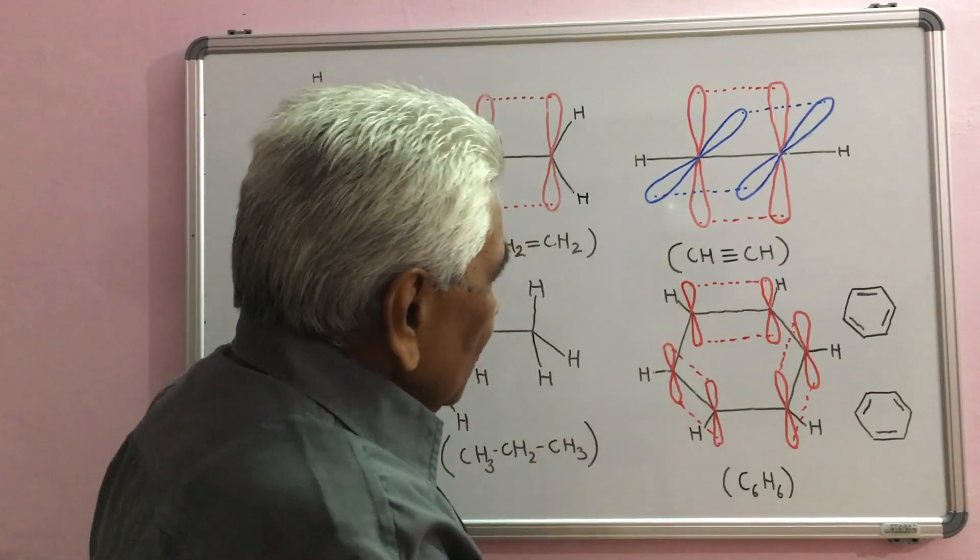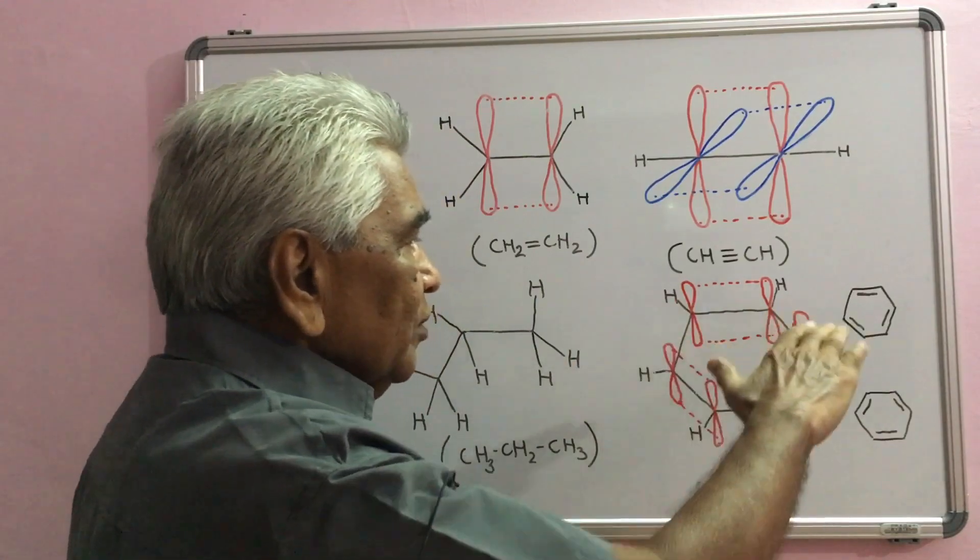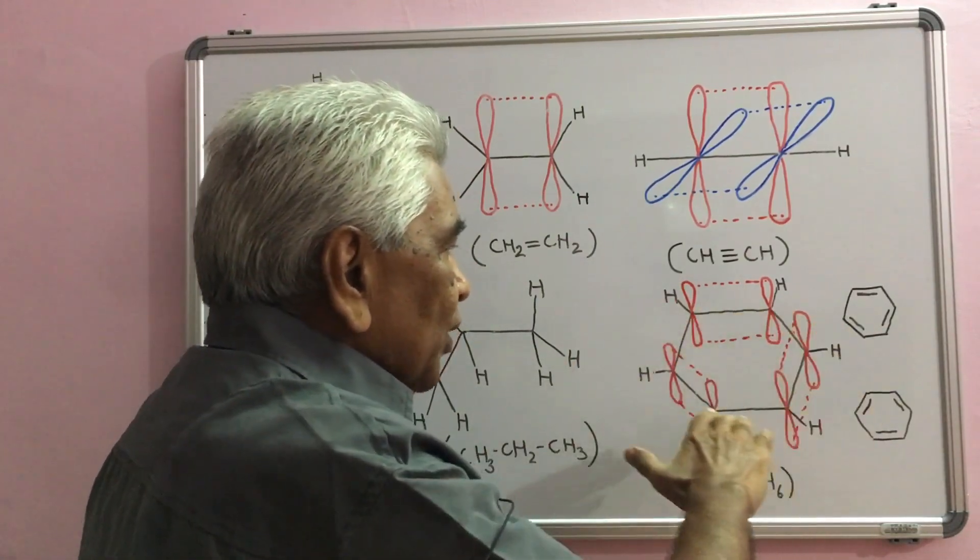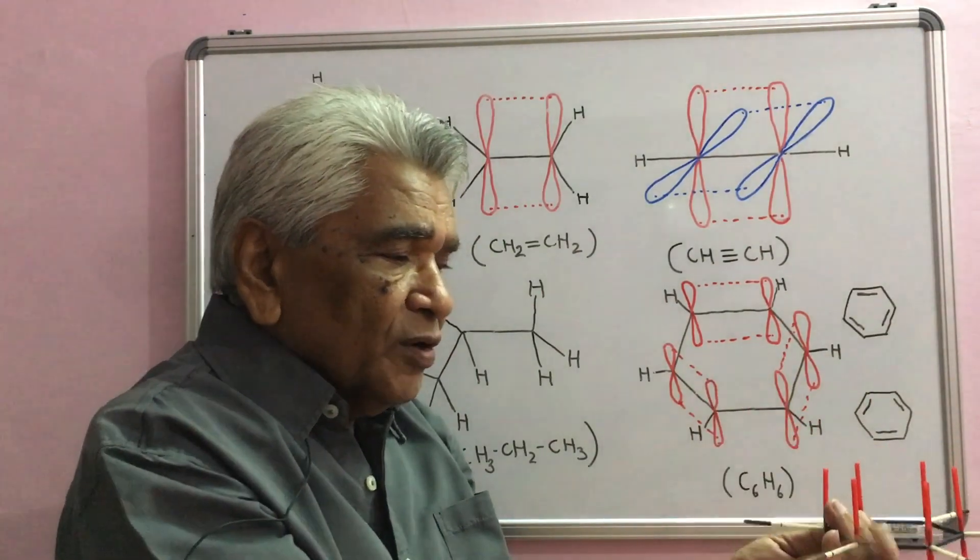In fact, all these overlap forming three pi molecular orbitals above and below the ring.